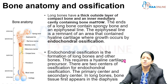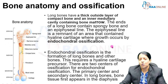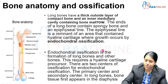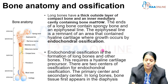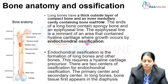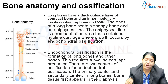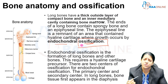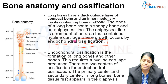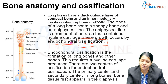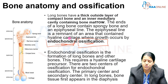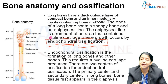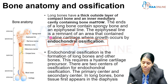How do bones grow? Bones mainly grow by a mechanism called endochondral ossification. Ossification means the process of bone formation. Endochondral — wherever 'chondral' appears it is associated with cartilage. So the process by which long bones grow is endochondral ossification.